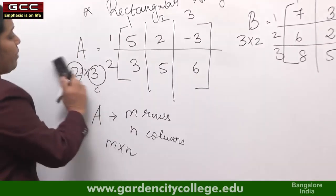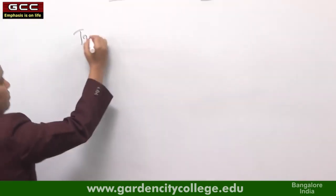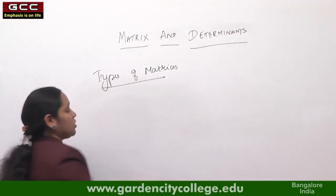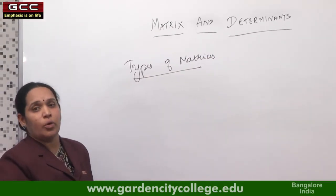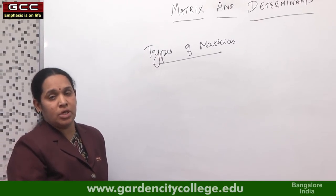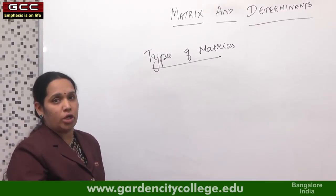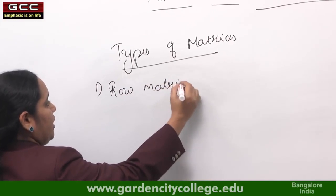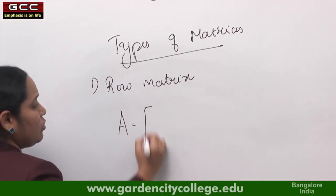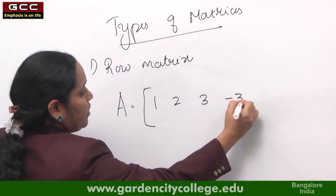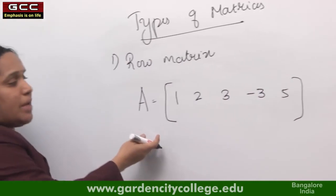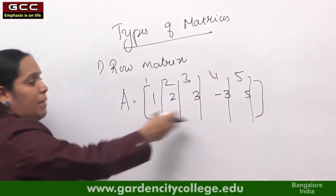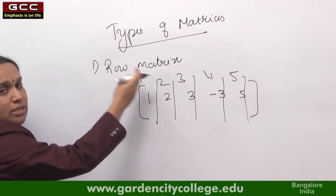Let us go on to the types of matrices. The first type is a row matrix. A row matrix is a matrix which has only 1 row and any number of columns. For example, A = [1, 2, 3, -3, 5]. This matrix has 5 columns but only one row, so such a matrix is called a row matrix.